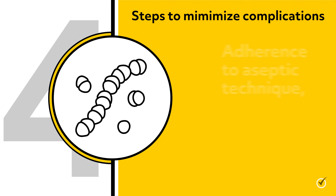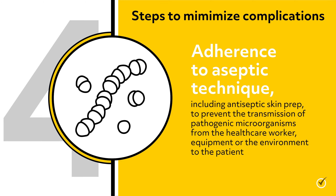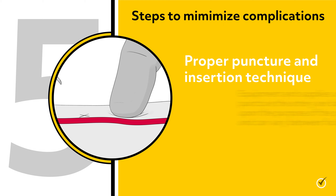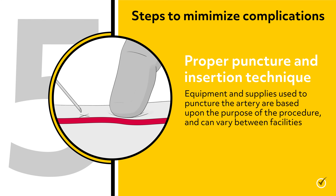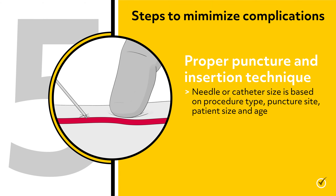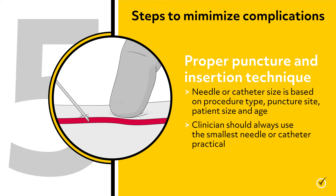Number four: adherence to aseptic technique, including antiseptic skin prep to prevent the transmission of pathogenic microorganisms from the healthcare worker, equipment, or the environment to the patient. Number five: proper puncture insertion technique. Equipment and supplies used to puncture the artery are based upon the purpose of the procedure and can vary between facilities. All equipment and supplies should be used in accordance with the manufacturer's instructions. Needle or catheter size is based on procedure type, puncture site, patient size and age; however, the clinician should always use the smallest needle or catheter practical.